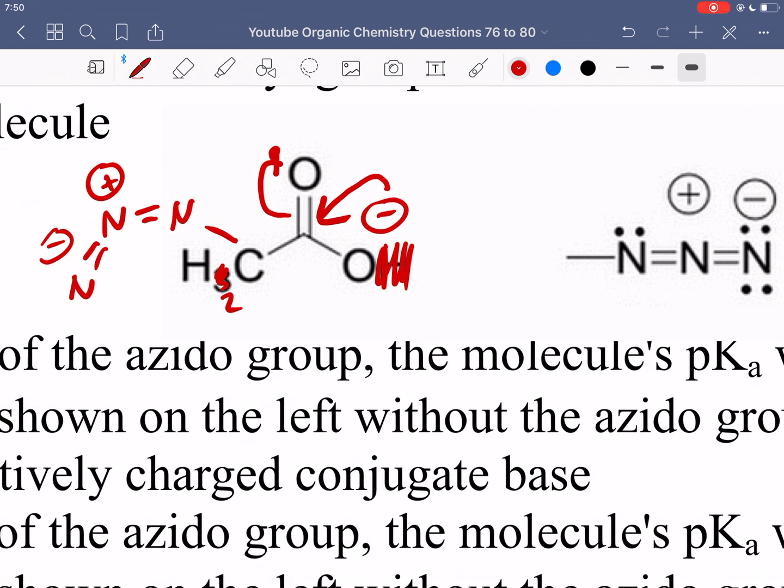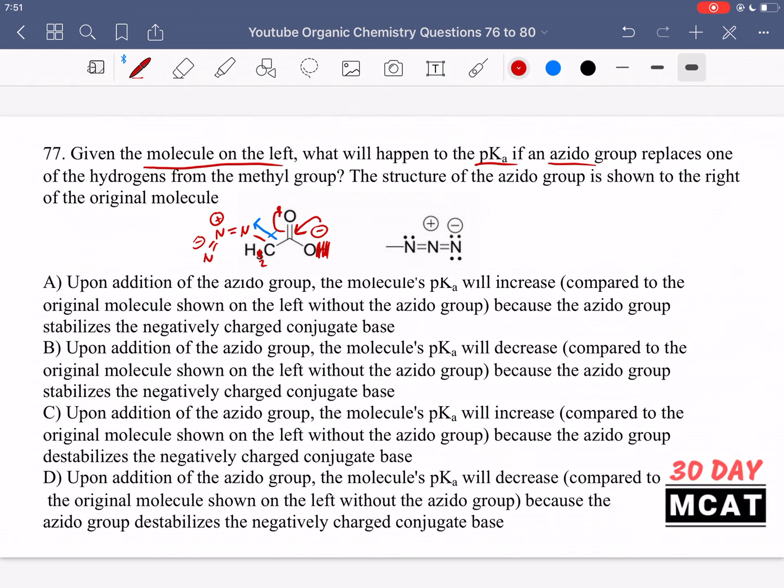When we add this group instead of one of the hydrogens, compared to the original carboxylic acid, we now have an electron withdrawing group. It's an electron withdrawing group because of the electronegativity of nitrogen. Due to the inductive effect, we're going to get electron density going towards nitrogen. So we have another place for this negative charge, that electron density to be distributed to. Therefore, it's going to go towards the azido group, and now the oxygens feel the effect of that charge even less. They're fine being in that state, and so we have a more stable conjugate base. When we add this azido group, we get a more acidic carboxylic acid, meaning a lower pKa.